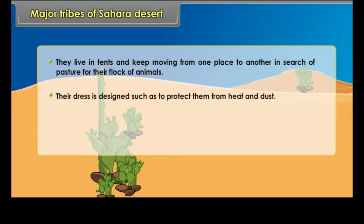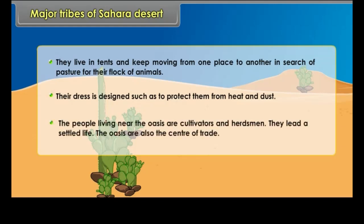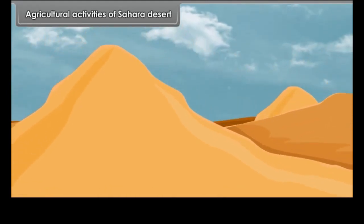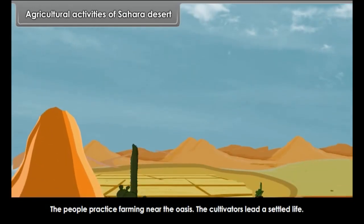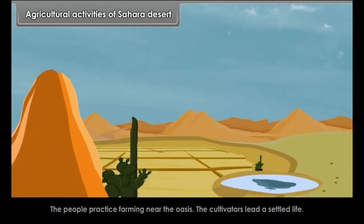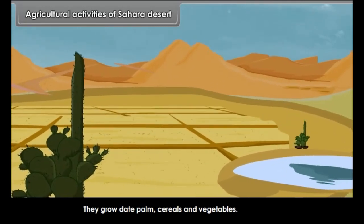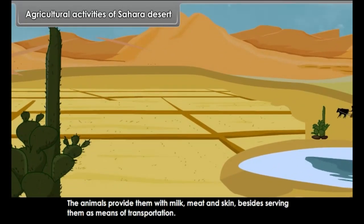Their dress is designed to protect them from heat and dust. The people living near the oasis are cultivators and herdsmen who lead a settled life. The oasis are also centers of trade. The people practice farming near the oasis. They grow date palms, cereals, and vegetables. The animals provide them with milk, meat, and skin, besides serving as means of transportation.